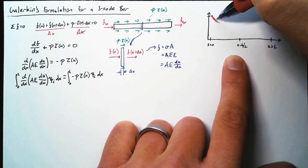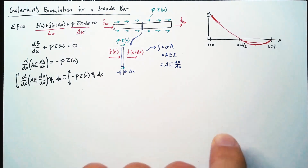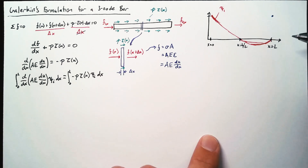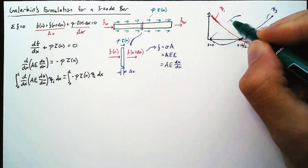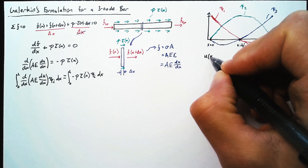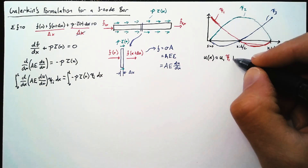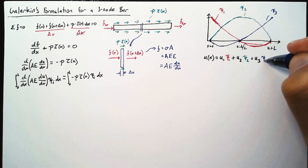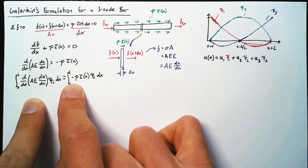The shape functions are parabolas. ψ₁ hits 0 at x = L/2 and x = L, and 1 at x = 0. ψ₃ is symmetric, hitting 1 at x = L and 0 at the other two locations. ψ₂ is a little different but is still a parabola. The displacement at a point x equals u₁·ψ₁ + u₂·ψ₂ + u₃·ψ₃ — and these are the shape functions we multiply by before integrating in Galerkin's formulation.